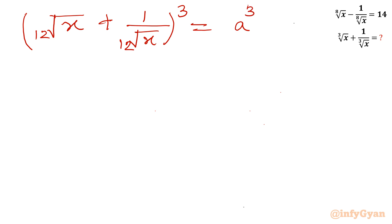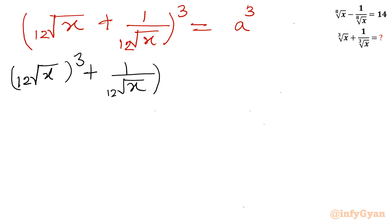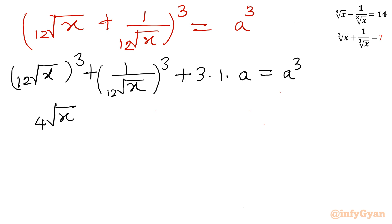Applying the formula (a plus b) whole cube, which is a cube plus b cube plus 3ab times (a plus b): we get 12th root of x whole cube, plus 1 over 12th root of x whole cube, plus 3ab where the product is 1, times (a plus b) which is a, equal to a cube on the right hand side. Now 12th root of x whole cube is 4th root of x, and 1 over 12th root of x whole cube is 1 over 4th root of x. So we have 4th root of x plus 1 over 4th root of x plus 3a equals a cube.